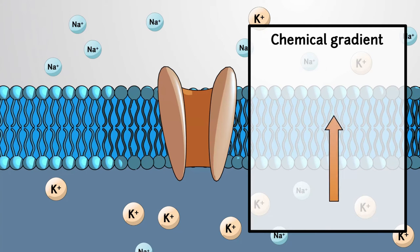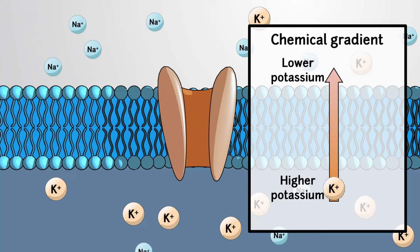Conversely, there is a lower concentration of potassium outside of the cell and more potassium inside, so its chemical gradient is in opposition to sodium's gradient.